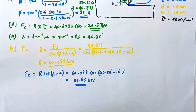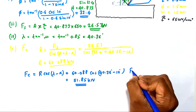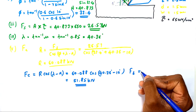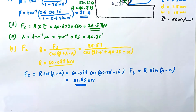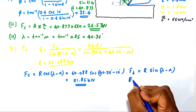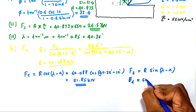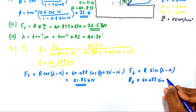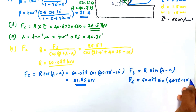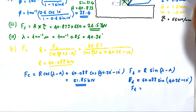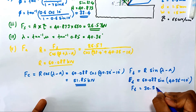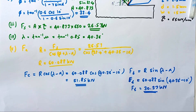We can also find the thrust force Ft = R·sin(λ − α) = 60.088 × sin(40.36° − 10°) = 30.37 kN.